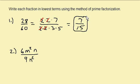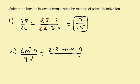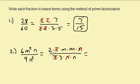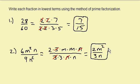Now let's look at this next one: 6m squared n over 9n squared. We write the 6 as a product of prime numbers: 2 times 3. And then m squared is m times m, and we have the n. Over 9, written as 3 times 3, and n squared written as n times n. This 3 and this 3 cancel, and this n and this n cancel. That leaves us with 2 times m times m, which is 2m squared, over 3n. And that's all of writing fractions in lowest terms.